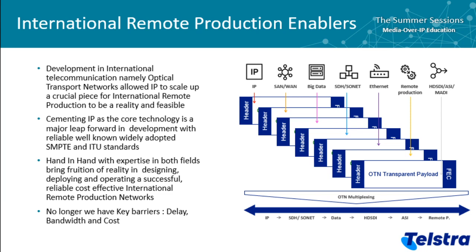Traditionally, we used PDH and SDH services, but those are restricted, clunky, and not flexible. Around 2001 to 2003, the ITU along with standards bodies came in with a new paradigm — an evolution network — the optical transport network. OTN allowed more flexibility, allowed us to scale up, and converge over a packet core network, which is friendly to IP.